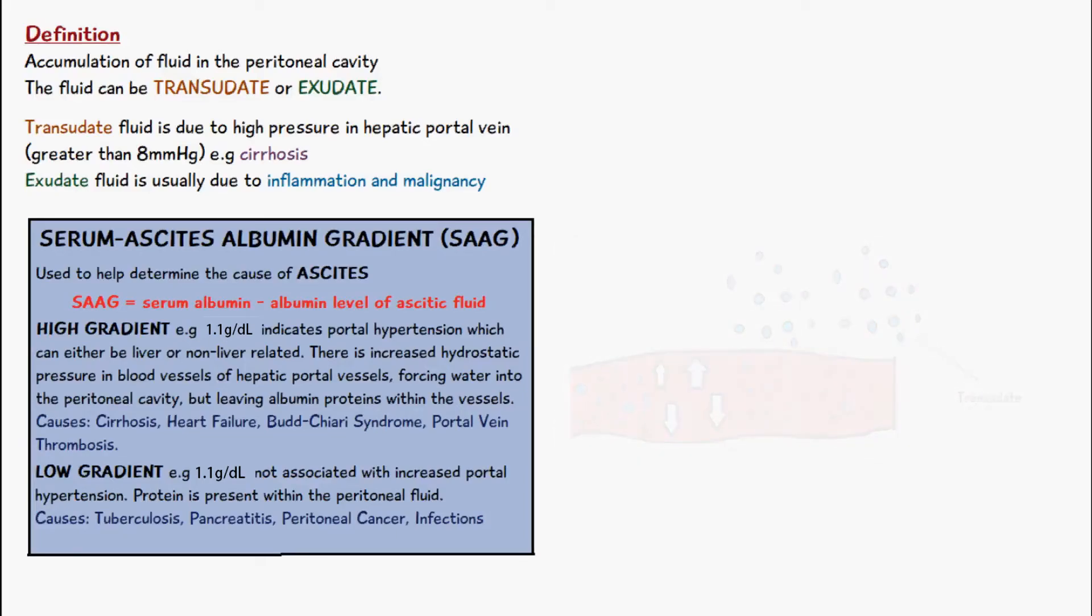With the low gradient result, it has to be less than 1.1 grams per deciliter, and it's not associated with increased portal hypertension because there is a lot of protein present within the peritoneal fluid or the ascites. The causes of this can be tuberculosis, pancreatitis, peritoneal cancer, and infections.